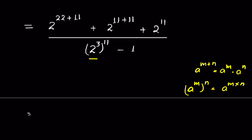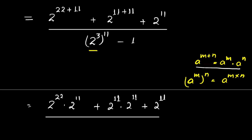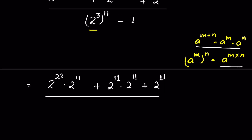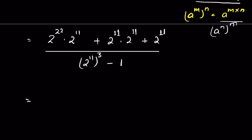Now 2^(22+11) = 2²² × 2¹¹ using the identity, plus 2¹¹ × 2¹¹, plus 2¹¹ in the numerator. We can also write a^(mn) as (a^n)^m, so the denominator becomes (2¹¹)³ minus 1. We can take 2¹¹ common from the numerator and write 2¹¹ × (2²² + 2¹¹ + 1).